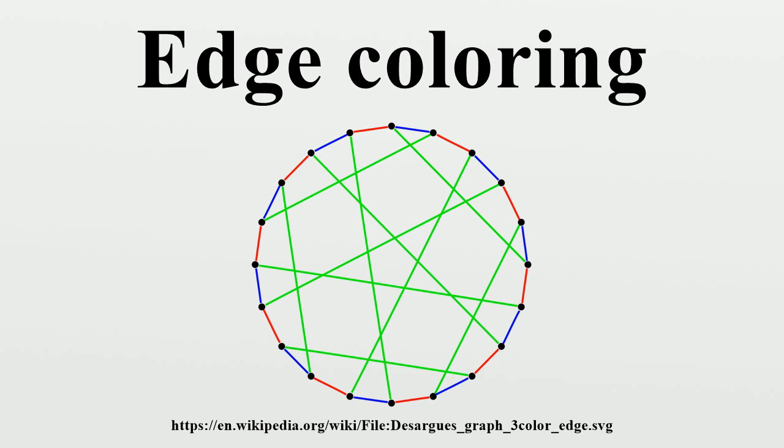That is, a proper edge coloring is the same thing as a partition of the graph into disjoint matchings. If the size of a maximum matching in a given graph is small, then many matchings will be needed in order to cover all of the edges of the graph. Expressed more formally, this reasoning implies that if a graph has M edges in total, and if at most beta edges may belong to a maximum matching, then every edge coloring of the graph must use at least M over beta different colors.